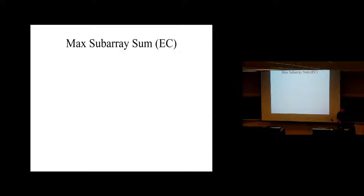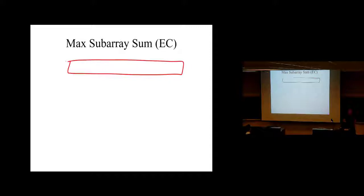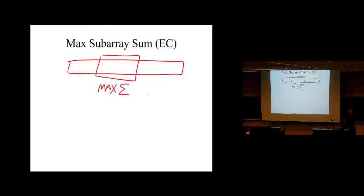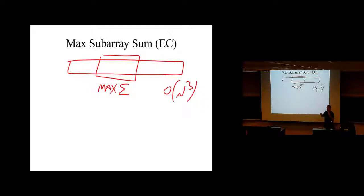So the maximum subarray problem: we have an array and we want to find the contiguous subarray with maximum sum. We already said there's an N-cubed algorithm for it — that's pretty brute force. Take all N-cubed pairs of beginning and end points of the subarray, add them all up, and when you do, you'll know the maximum sum. That's N-cubed.